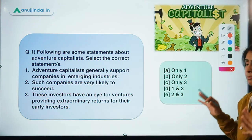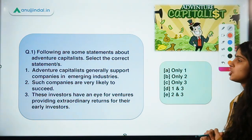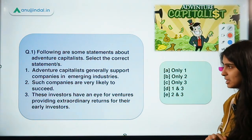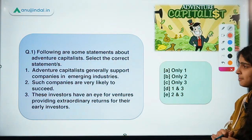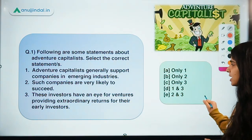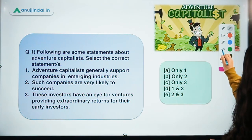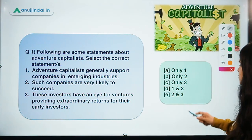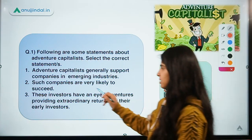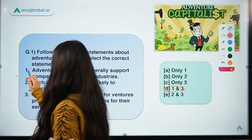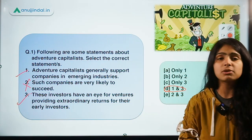Question number one gives you some statements about a topic called Adventure Capitalists and you have to select the correct statement. The correct option for this question is option D, meaning statements one and three are correct, and statement two is not correct.